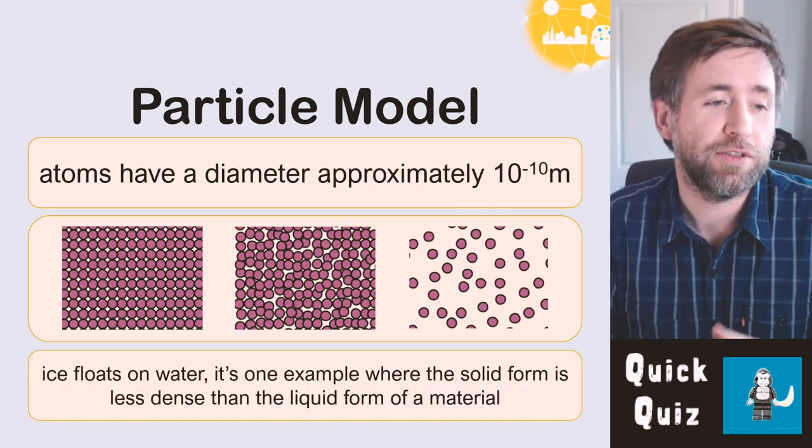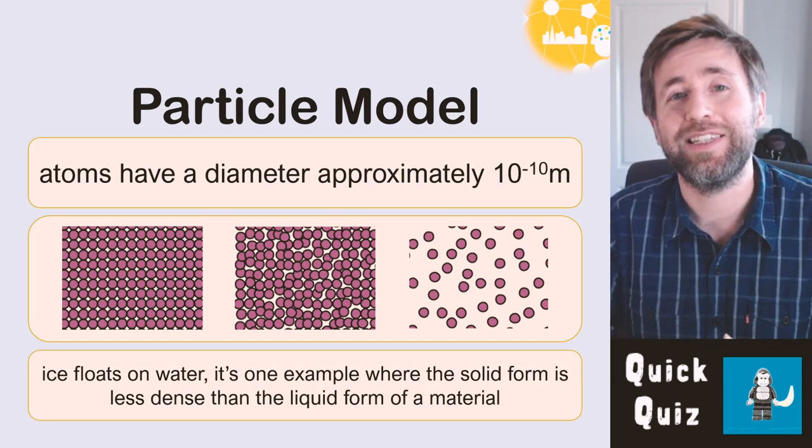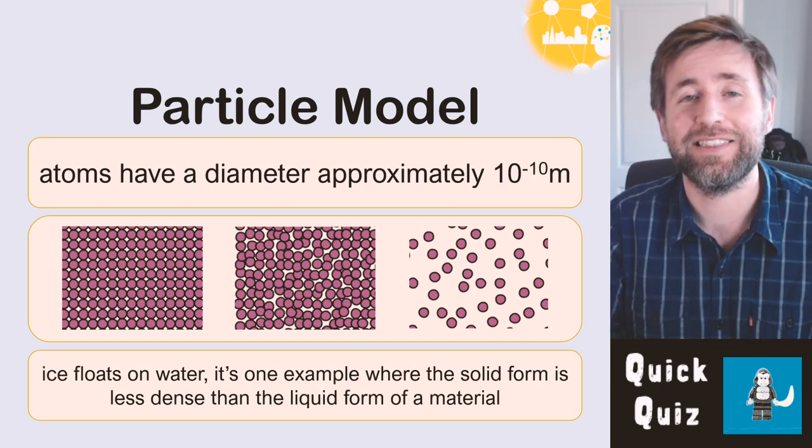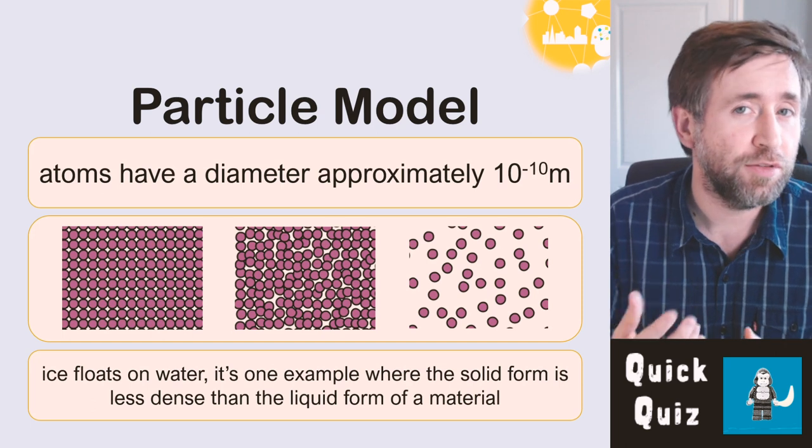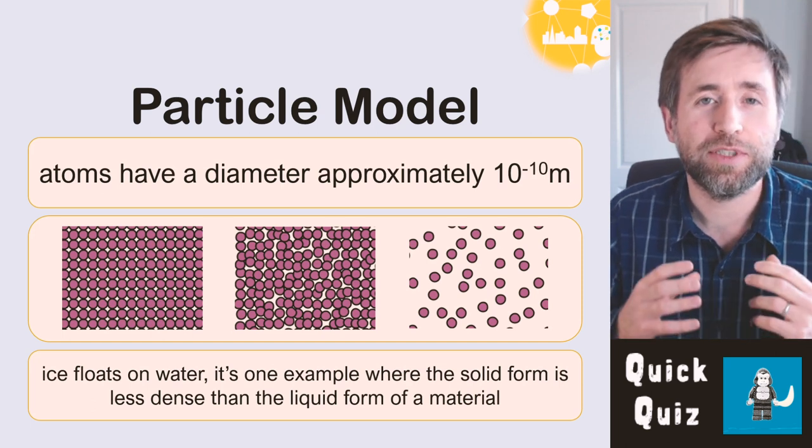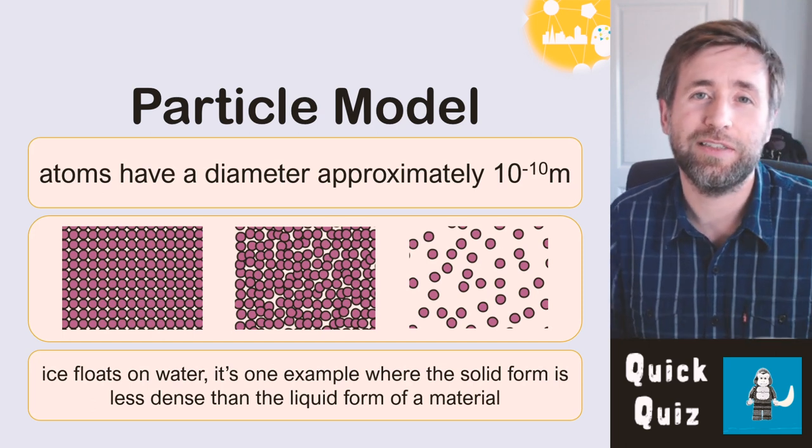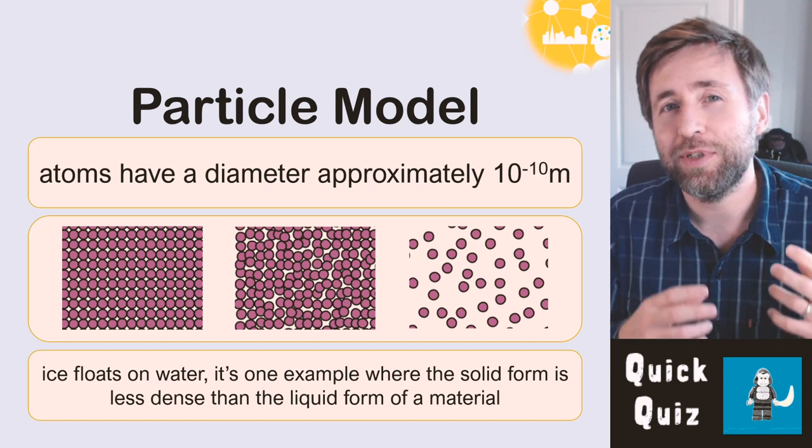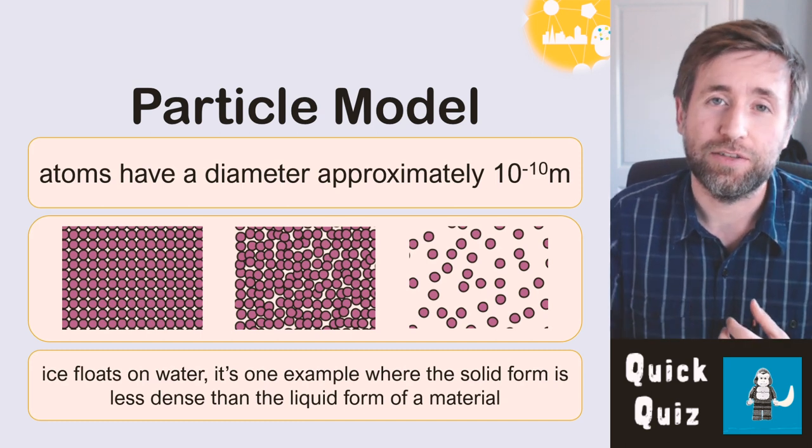Ice floats on water, so that shows that the solid is actually less dense than the liquid. There's only a few substances where that is the case, but it's important as a demonstration that actually liquids aren't always less dense than solids.